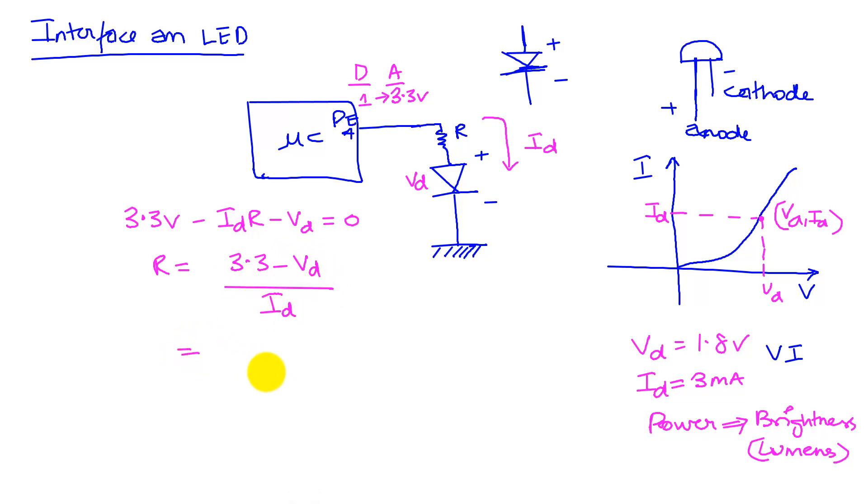This will tell us that R is simply given by 3.3 minus VD divided by ID. For us, that's going to be 3.3 minus 1.8 divided by 3 milliamps, 3 times 10 to the minus 3. This will come out to be 1.5 divided by 3 times 10 to the minus 3, and we'll get 500 ohms.